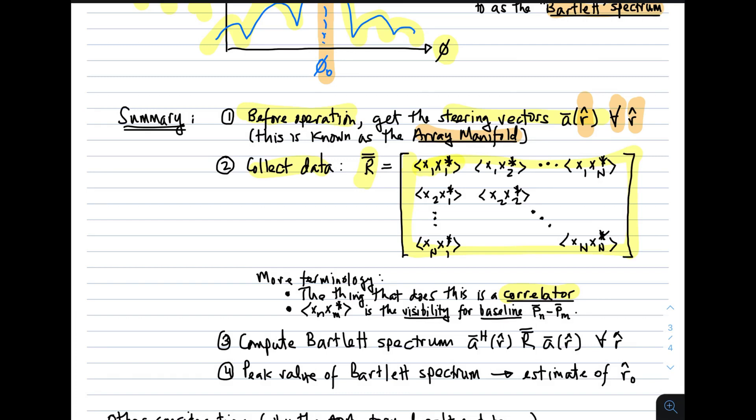Each element of the spatial covariance matrix is a visibility. It's the visibility for a baseline, where what we mean by baseline is the vector that points to element n from element m. What the spatial covariance matrix is doing is looking at each one of the possible baselines, computing a correlation which we refer to as the visibility. Third, we compute the Bartlett spectrum. We take the covariance matrix and left and right multiply by the steering vector for every value that corresponds to a plausible angle of arrival. Finally, we find the peak value of that spectrum and take that to be the estimate of the direction of arrival.